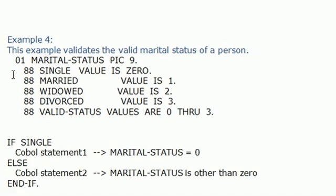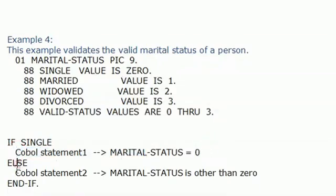This example validates the marital status of a person. Here the 88-level condition values are single, married, divorced, etc. In the COBOL program you can handle the status like: if single, what is the logic; else, what is the logic.